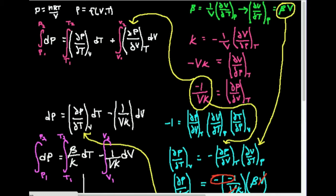If I use the ideal gas equation of state, it's pretty trivial to find the partial of P with respect to T — that derivative is just nR over V. The partial of P with respect to V is a little harder. Writing P equals nRT times V to the minus one, that derivative is negative nRT over V squared, and then you integrate that times dV.